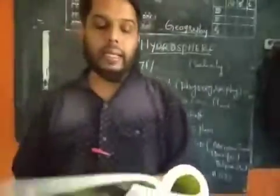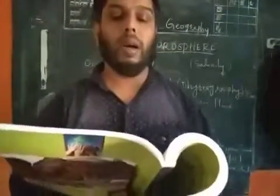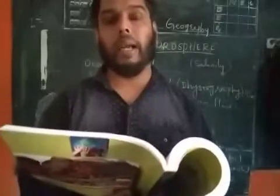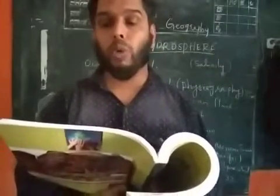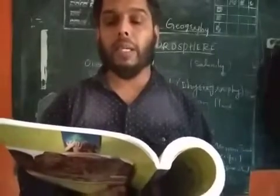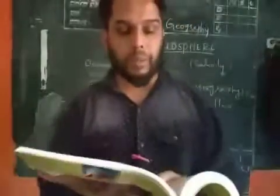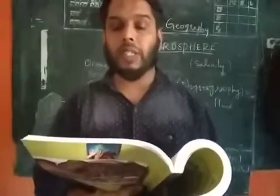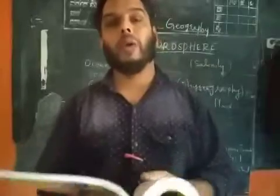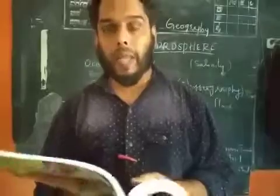Spring tides take place when the earth, moon, and sun are in the same straight line - for example during new moon or full moon. During spring tides, high tides are at their highest and low tides are at their lowest. Neap tides occur on the first quarter and last quarter days in the lunar cycle. The tides vary according to the movement of the moon and earth.